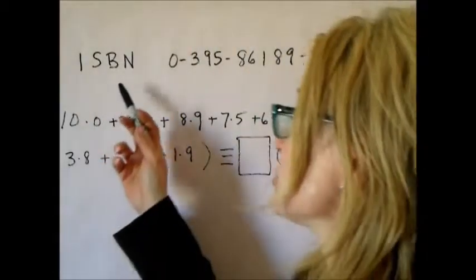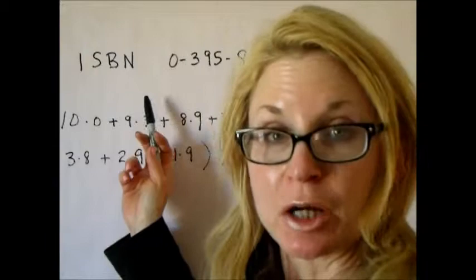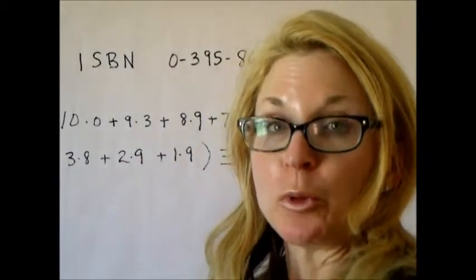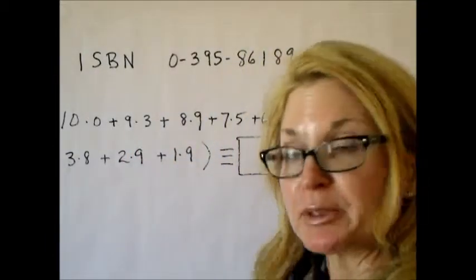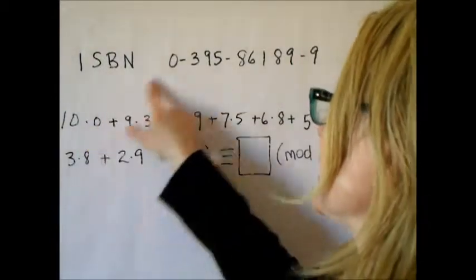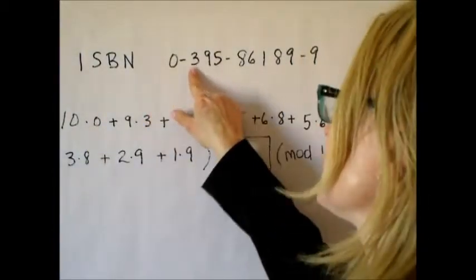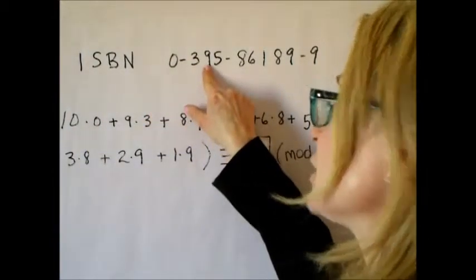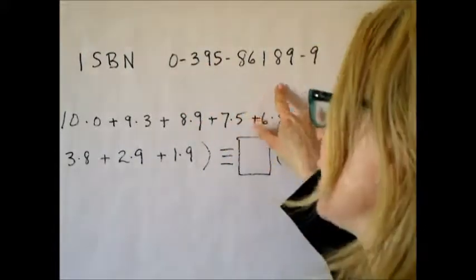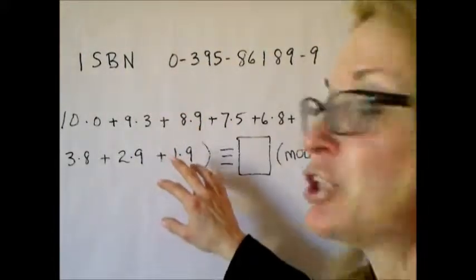If someone gave you this ISDN number and asked you to check whether or not it was valid, we would simply do the modular arithmetic. This involves taking 10 times the first digit plus 9 times the second plus 8 times the third and so on, adding all of that up and checking to see what it is mod 11.